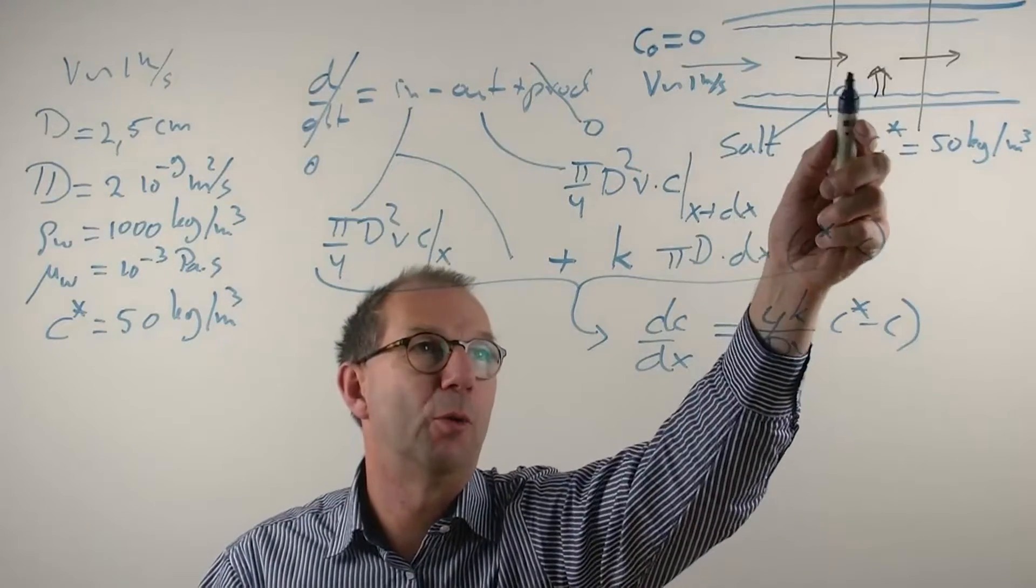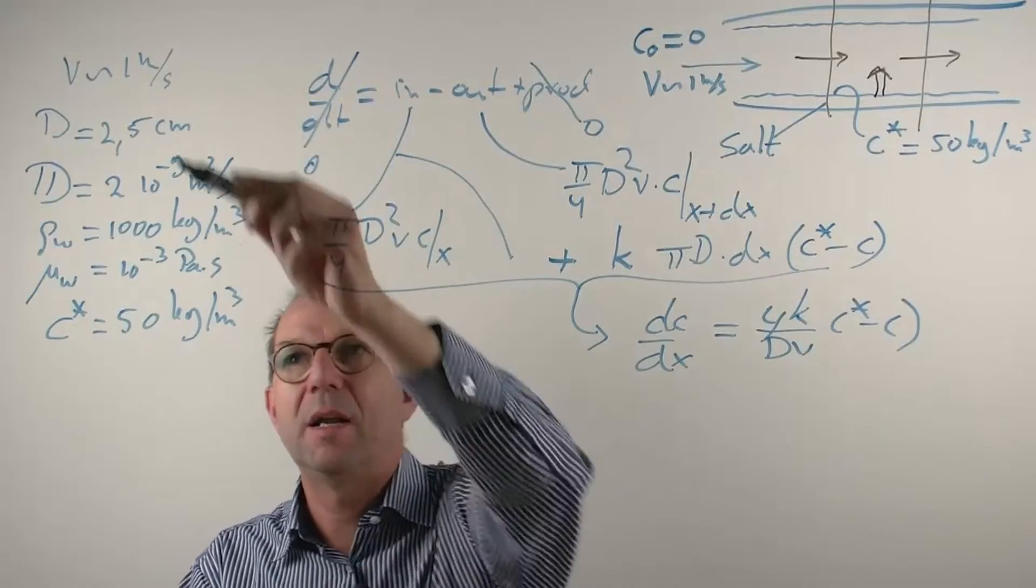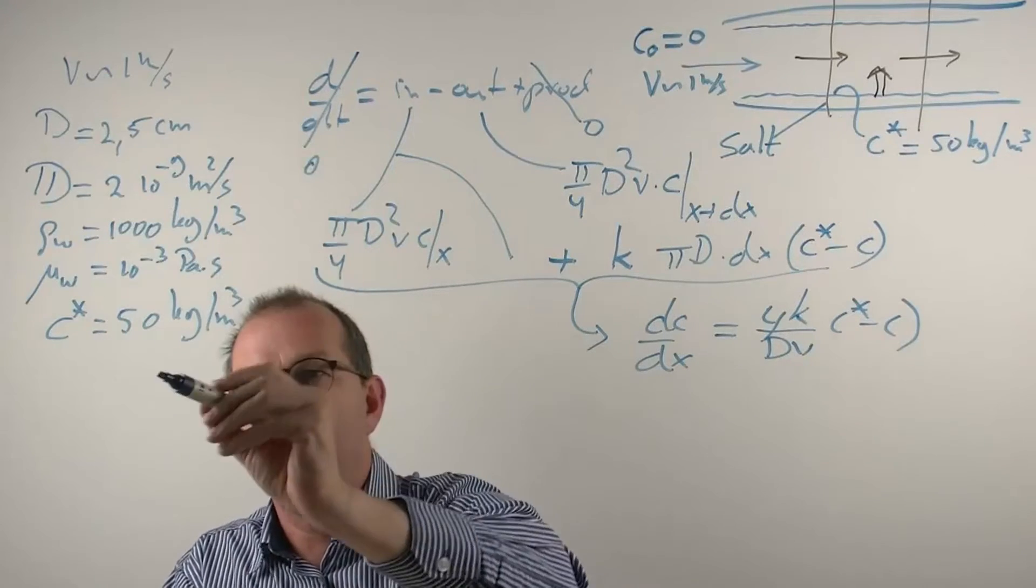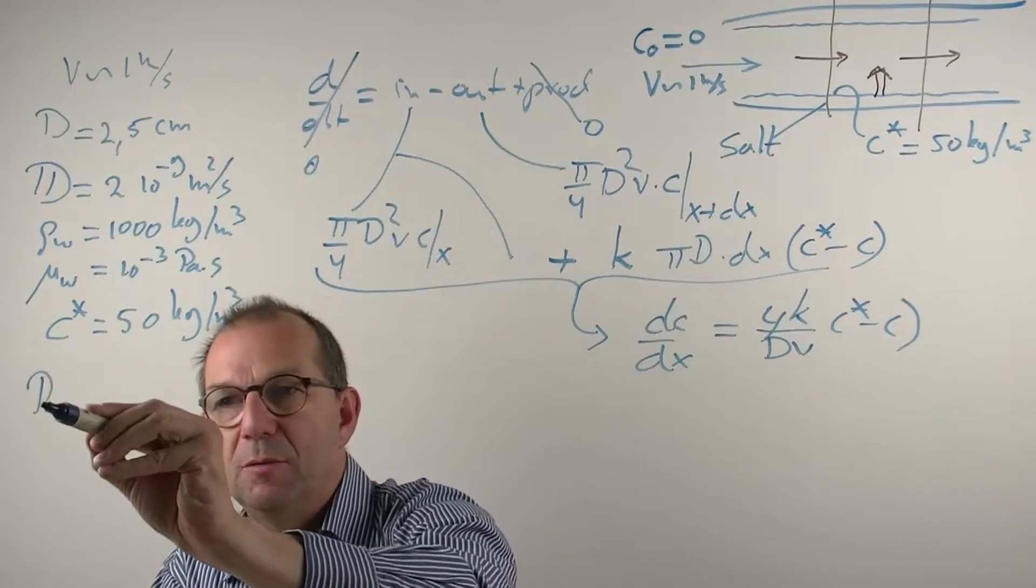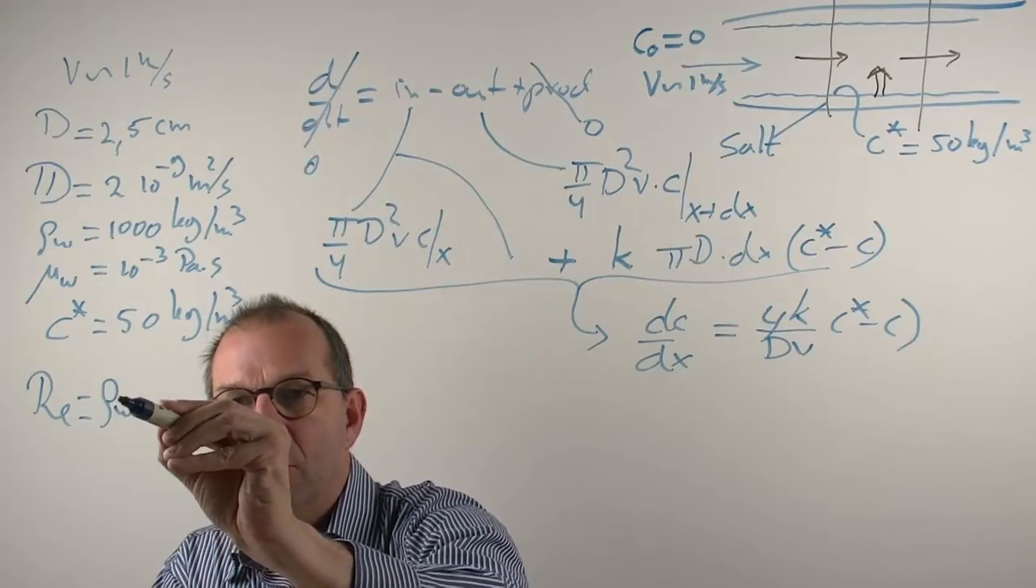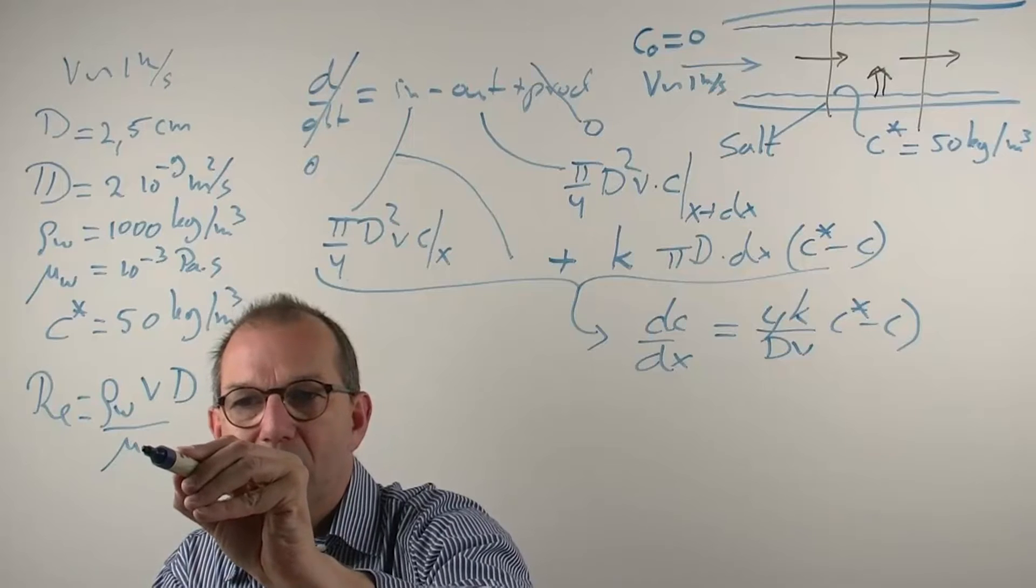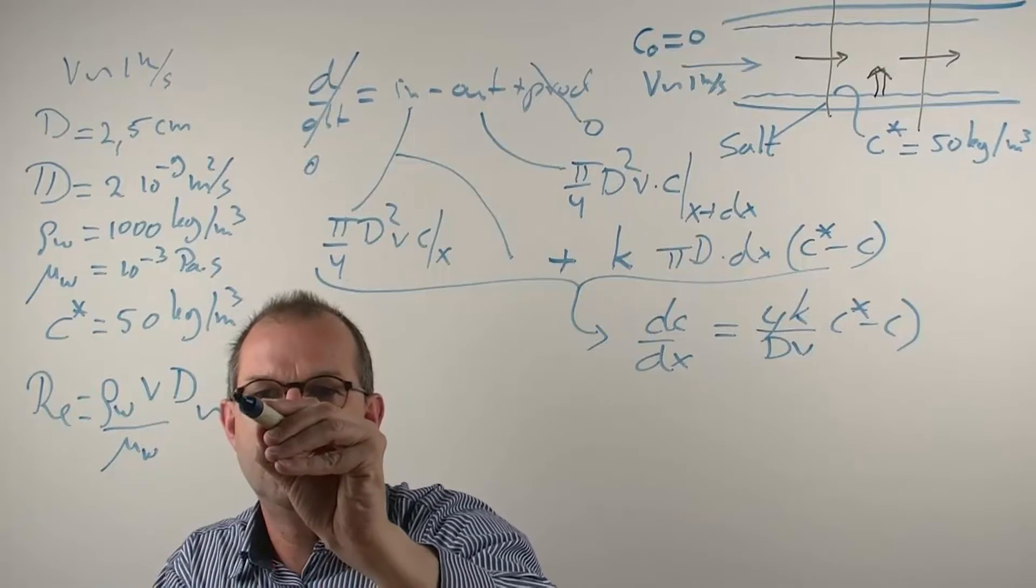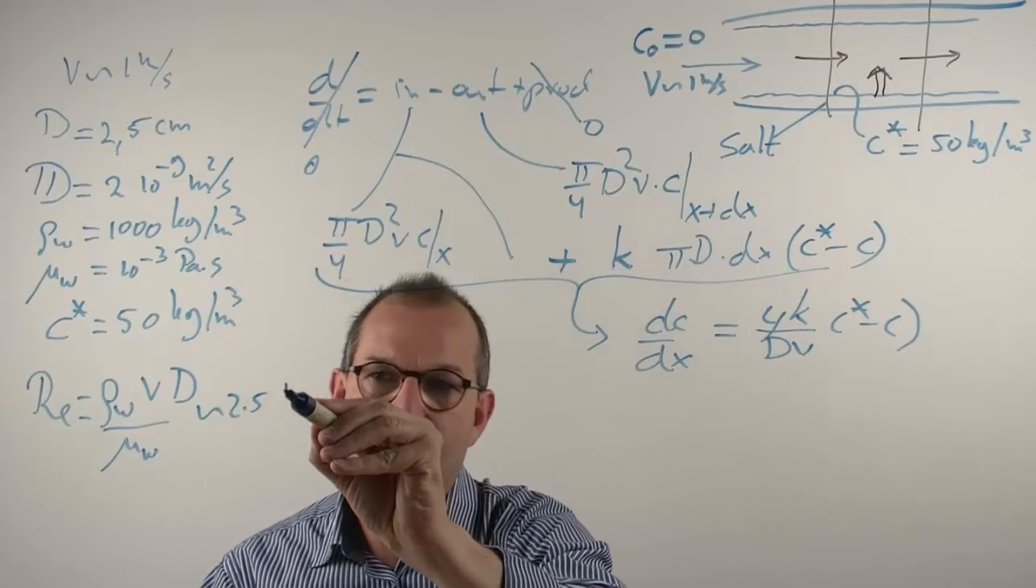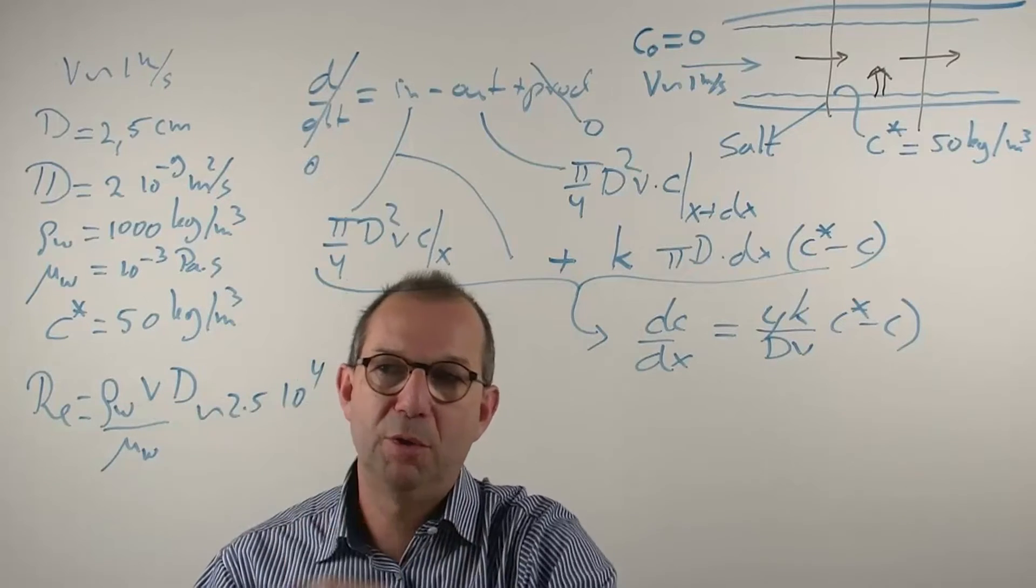To do that I need to know what kind of flow is this, is this laminar or turbulent. And I back out of this number what the Reynolds number is, and if you do that, Reynolds being ρ of water, velocity, the diameter of the tube over the viscosity is about 2.5 and I have 10 to the power 4. Turbulent flow.